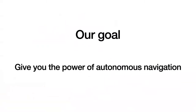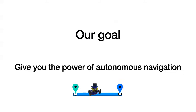This gets back to our goal in this class: giving you the power of autonomous navigation — how do we get our robot to go from point A to point B? Creating a path or map is one possible option. Just as a refresh, what's the simplest approach for our robot to get to a goal?